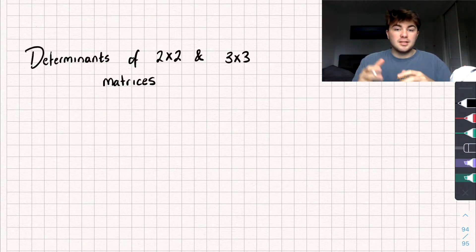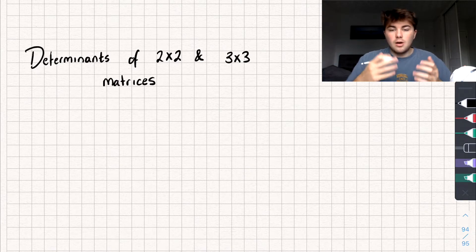Now one thing we need to know is that to find the determinant of any matrix, it has to be what's called a square matrix, but obviously we're looking at 2x2 and 3x3 matrices, so it's obviously a square matrix.